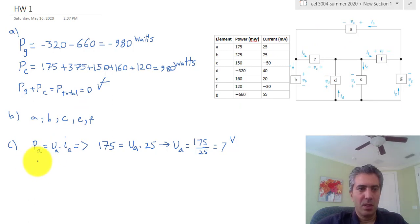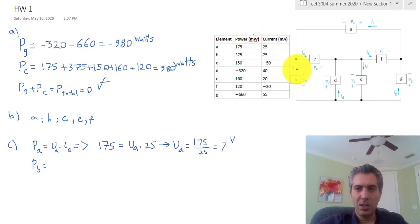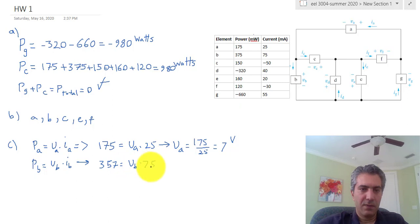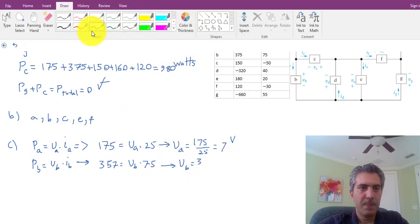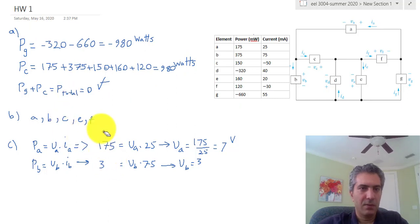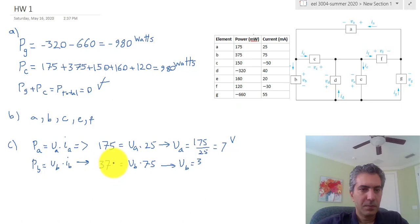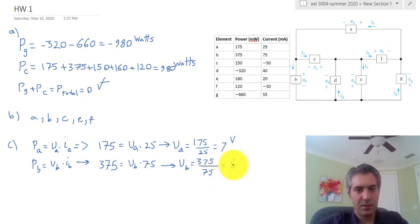For component B, the current is going into the positive terminal, so P_B = V_B × I_B. The power is 375 W and the current is 75 A, so V_B = 375 / 75 = 5 volts.